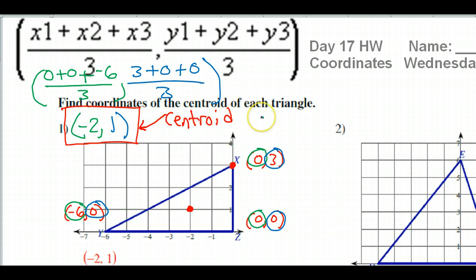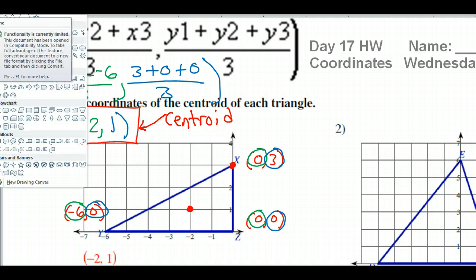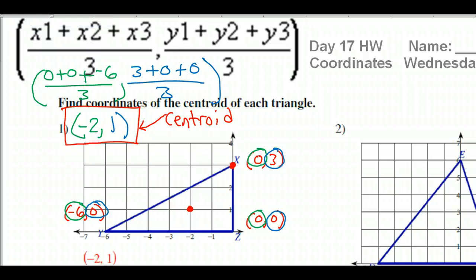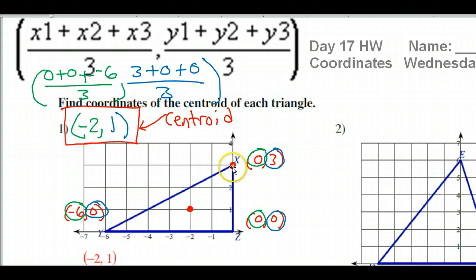Let's make the connection with the way we learned to find the centroid before. Remember, the centroid is the intersection of the medians — hopefully you were thinking medians. A median goes from a vertex to the midpoint of a side.